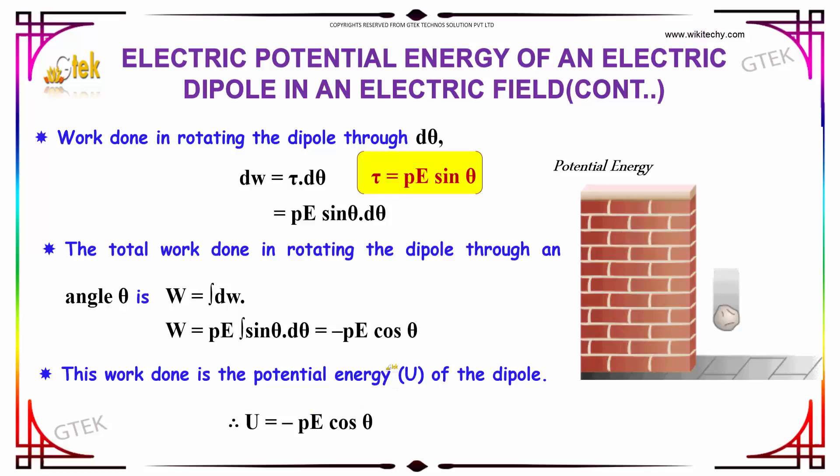This work done is the potential energy U of the dipole. Therefore, U = -pE cos θ.